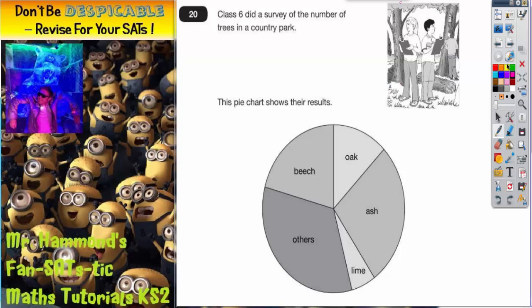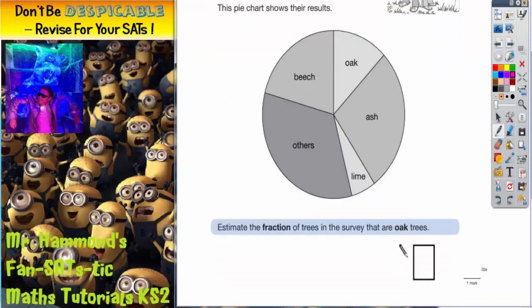Now we're not really interested in the picture so we can scroll down from that. Let's read what it says we've got to do. Estimate the fraction of trees in the survey that are oak trees. Estimate the fraction.